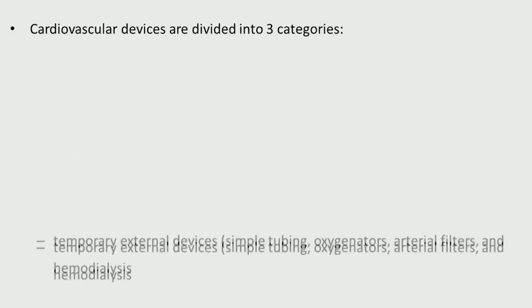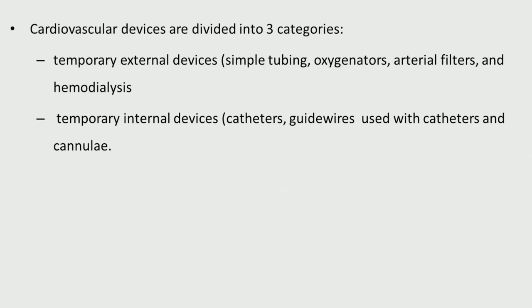These devices are divided into three categories. Temporary external devices — such as simple tubings, oxygenators, arterial filters, hemodialysis. Temporary internal devices like catheters, guide wires used for catheters, cannulae, and any angioplasty-related devices — there could be many temporary devices.